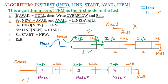Step 3: Set info[new] = item. The 'new' pointer is pointing to the first free node, and we place the item 11 into the info part of that new node.